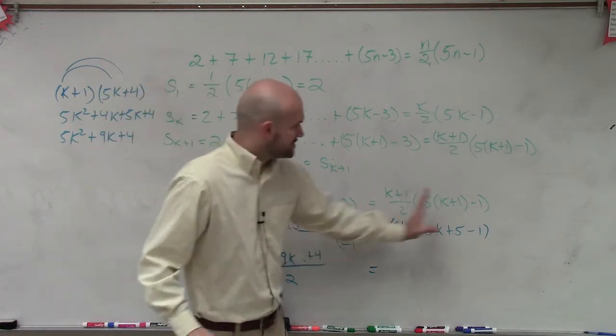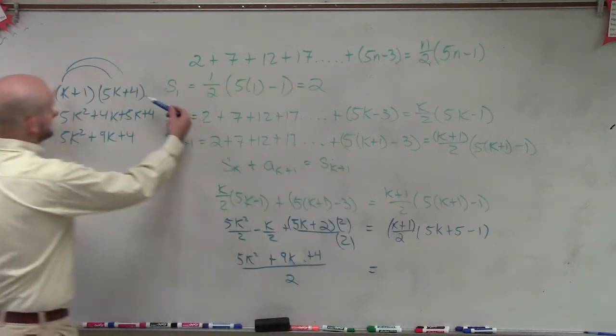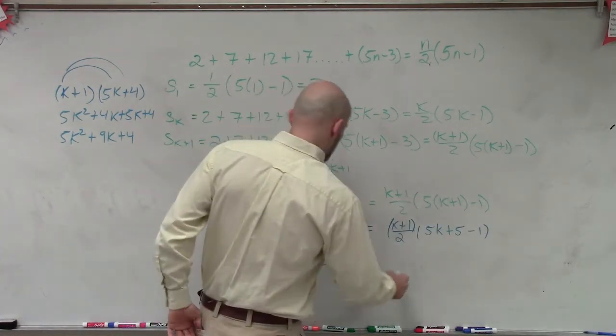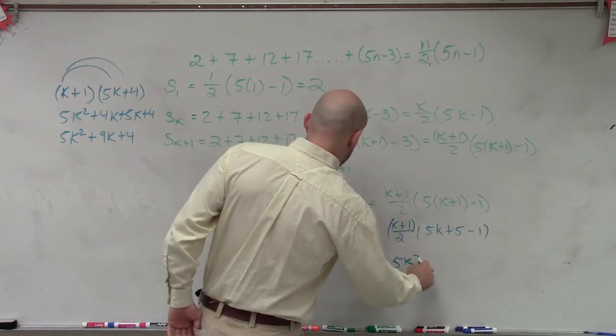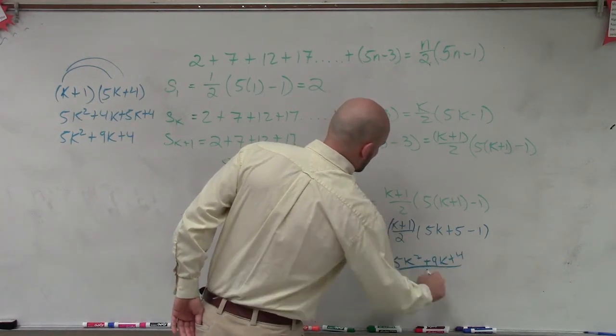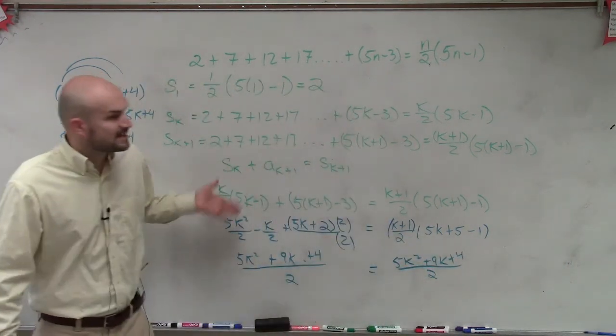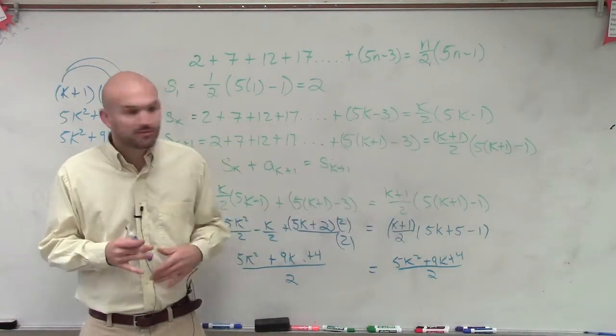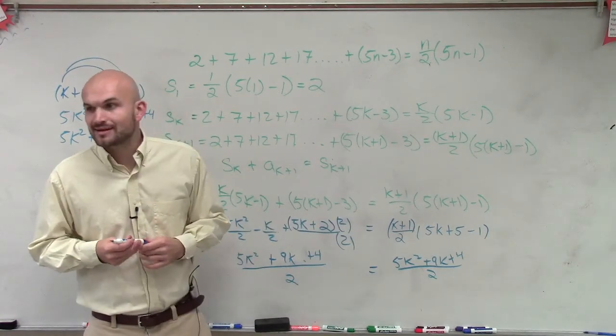Now, as I multiply this totally across, you guys can see I multiply the numerator up here, and then the 2 times 1 going across, and I'm going to get, again, 5k squared plus 9k plus 4 all divided by 2. And since you can see that we have s of k plus a of k plus 1 equals s of k plus 1, we have now proved that this formula works by induction.